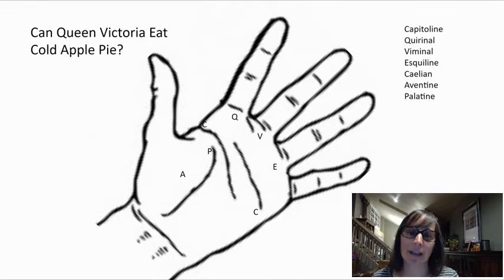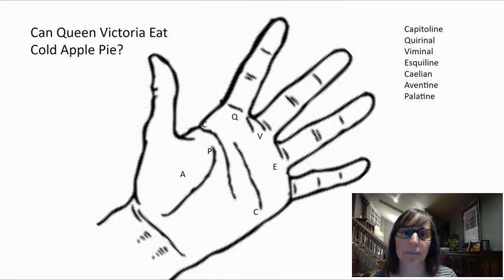Okay, so that gives you the seven hills of Rome on your hand, just like in this picture. All right, here's a map that shows you what it looks like in a real map form. So you can see the outline of Rome around those hills and the Tiber going down from your thumb to your wrist.